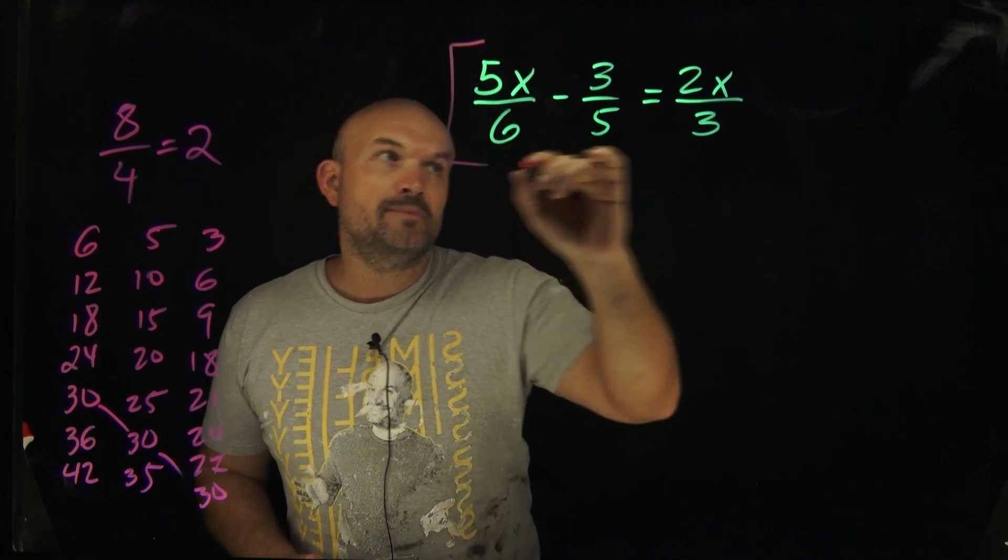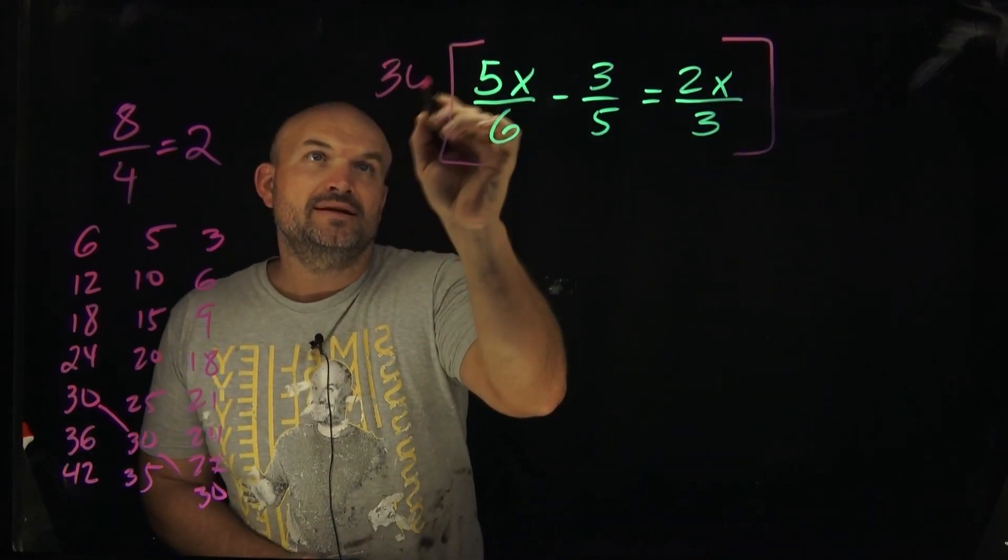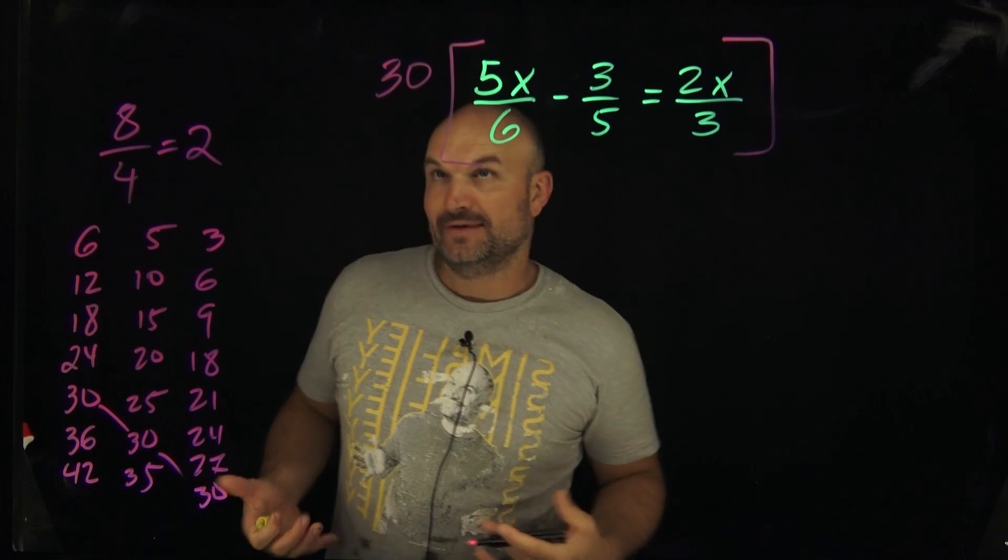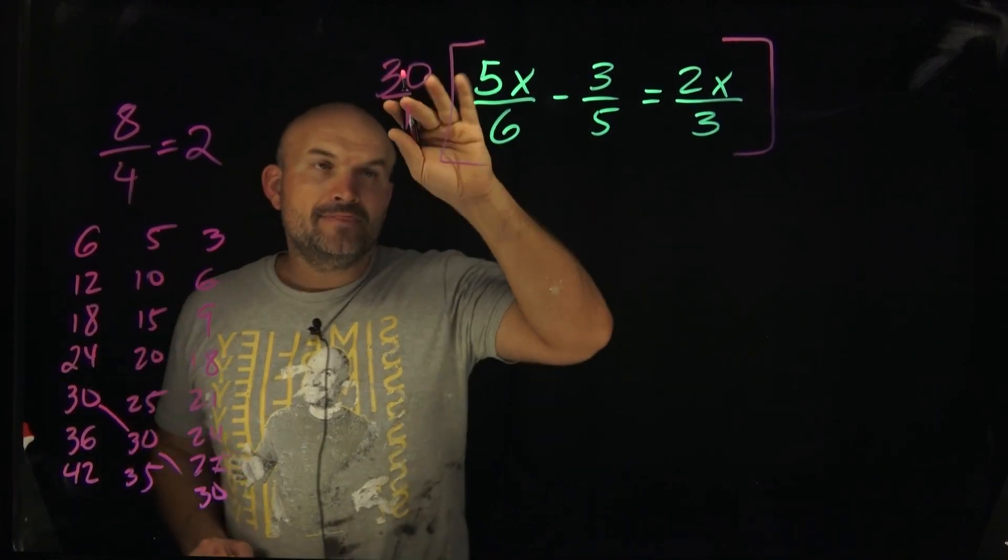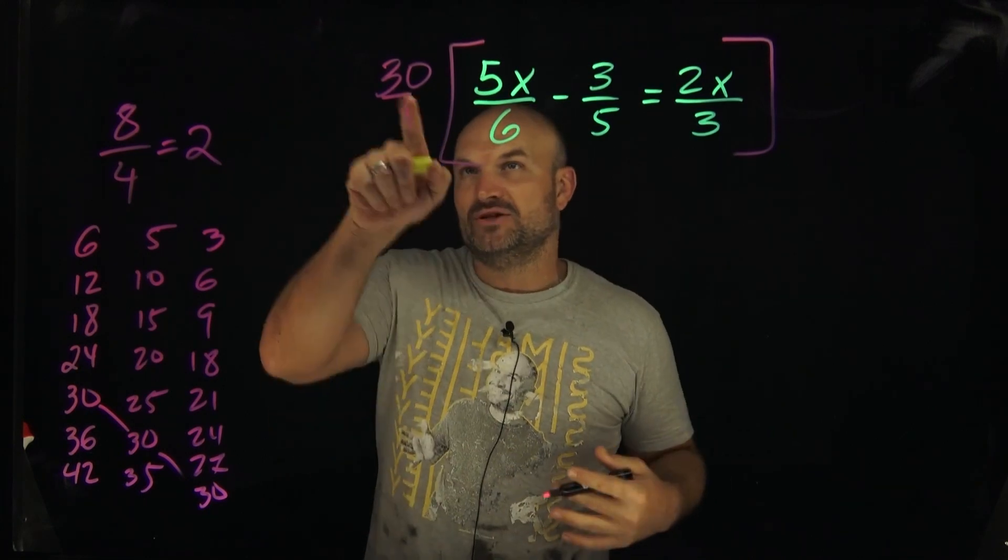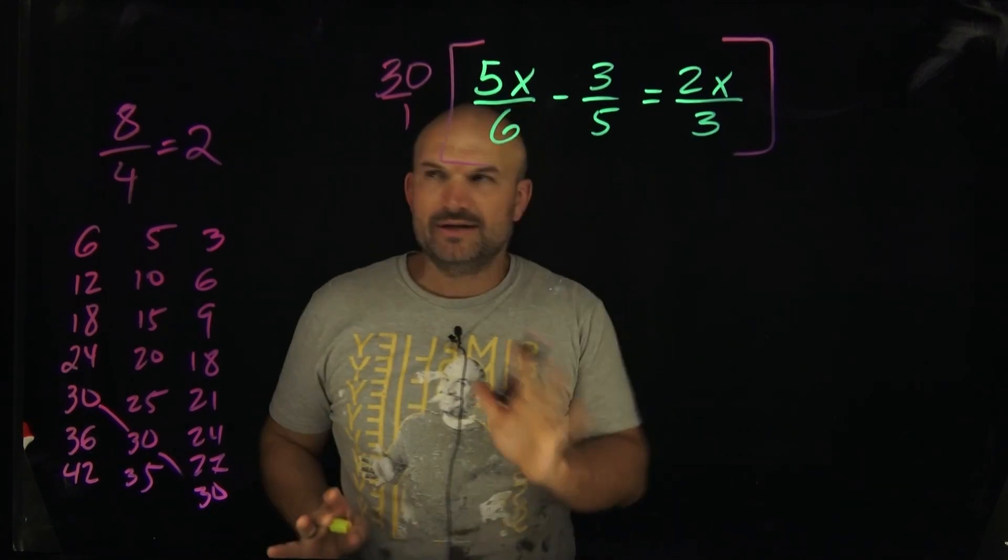So what I'm going to do is multiply everything times 30. Now, I'm not just writing this as 30. I'm actually writing this as 30 over one. This is another kind of mistake that students will get mixed up on. They'll multiply the 30 times the denominators. We don't want to do that.